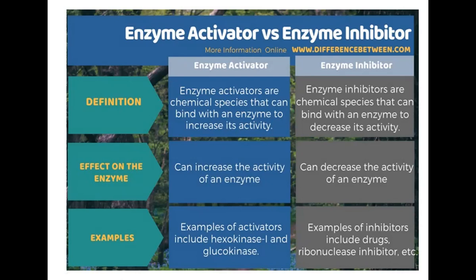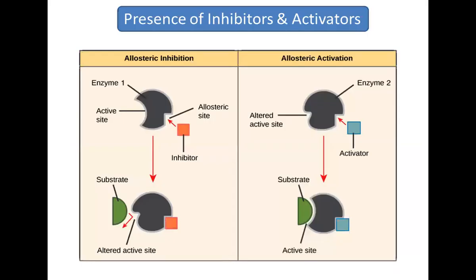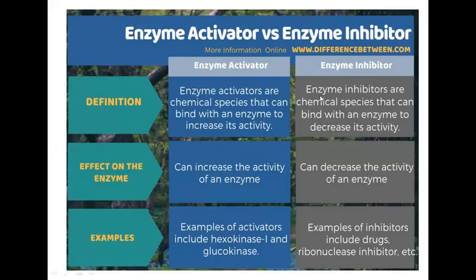The activator binds to the enzyme on the activated part — the binding side — and activates the substrate binding site. Once activated, the substrate comes in and binds to the active site. The activator functions to increase the availability of the substrate binding site.